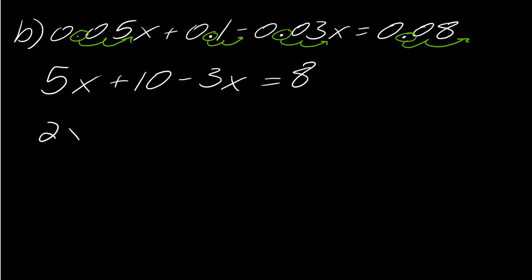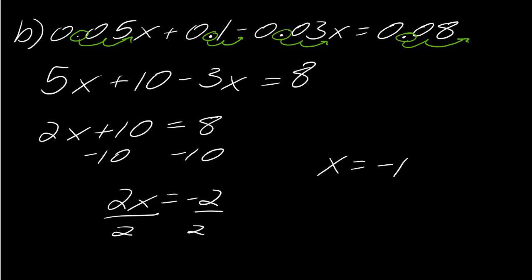So this becomes 2x plus 10 equals 8 and then I can subtract off the 10 to get 2x equals negative 2 and divide both sides by 2 to get x equals negative 1. So that's kind of the idea.